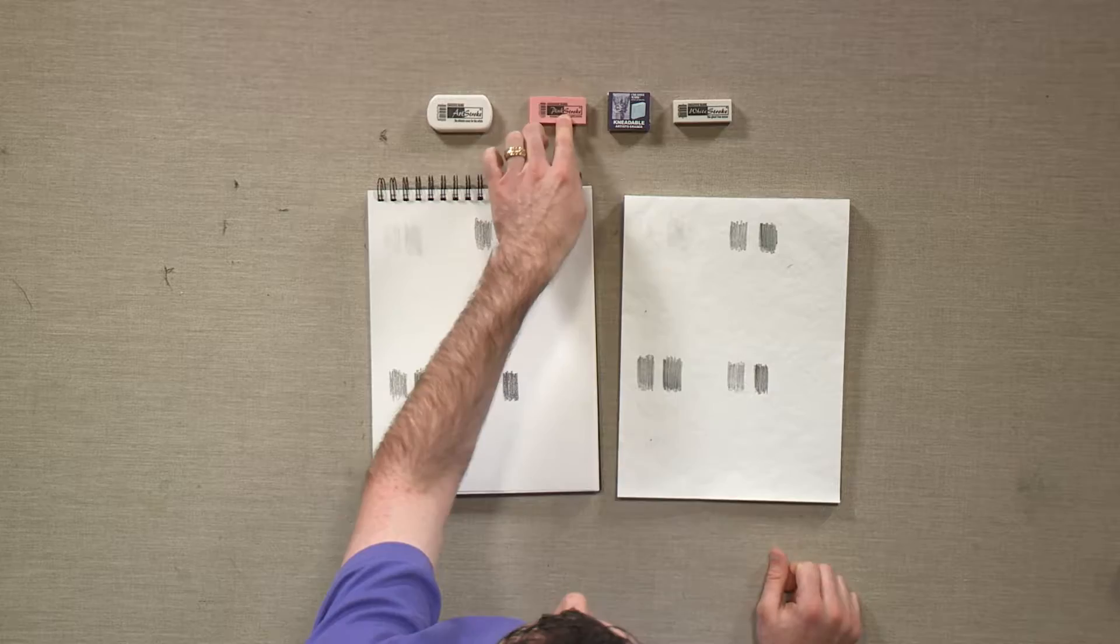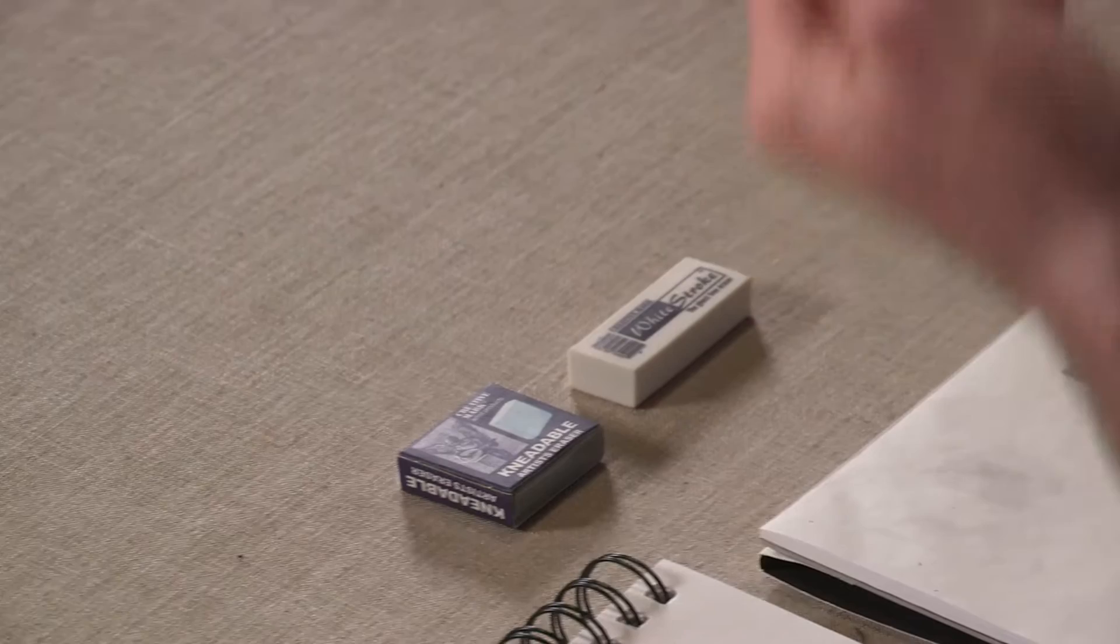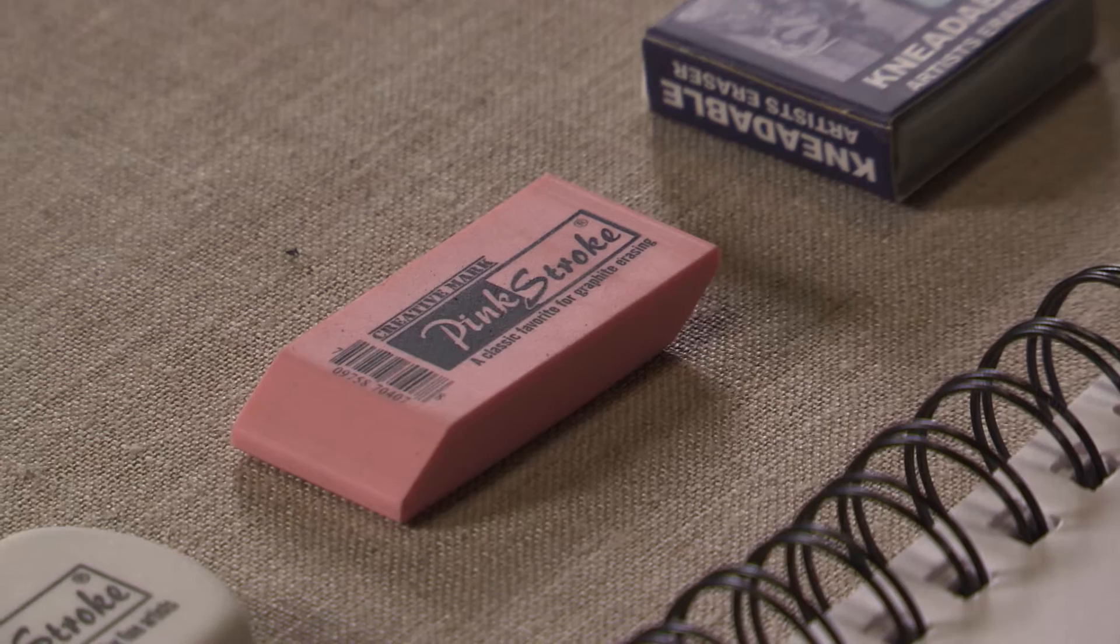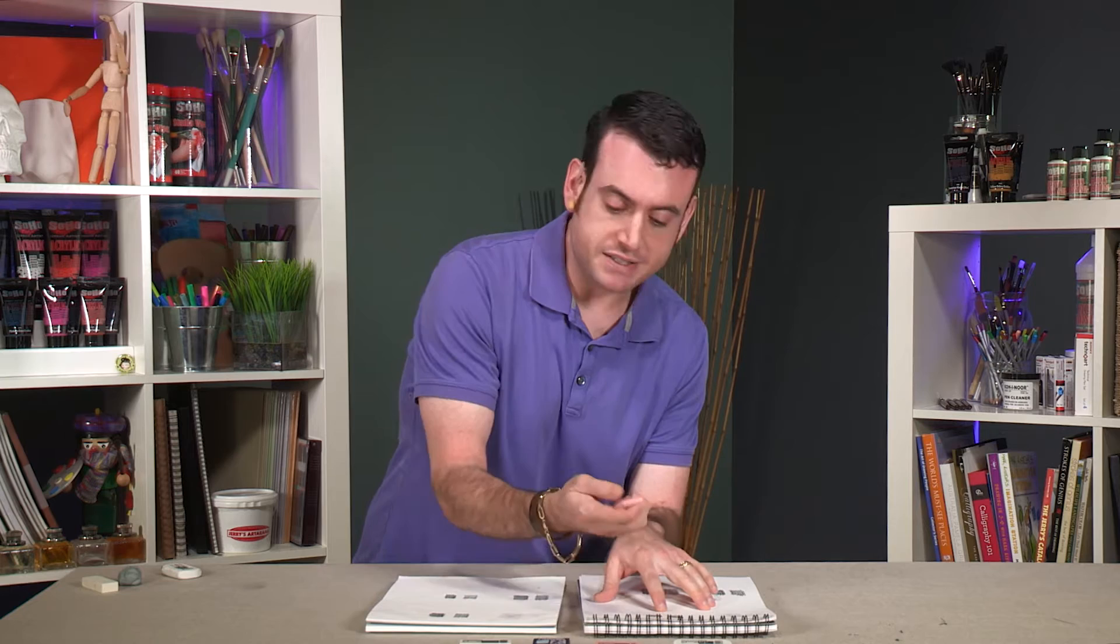The pink stroke eraser, this is your rubber eraser, and it's more traditional. This is what's on the back of a number two yellow pencil. It's generally considered more abrasive, generally considered to be designed specifically for graphite, but it's for whatever works for you, more or less. So we'll just kind of compare.